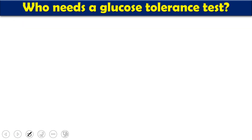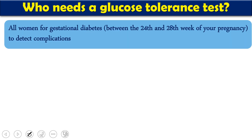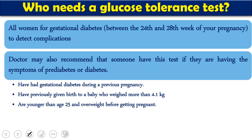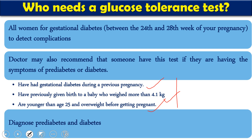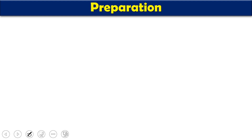Now, who needs to go for a GTT test? There are certain conditions when a doctor normally suggests this. All women who had previously been diagnosed with gestational diabetes, roughly between the 24th to 28th week of their pregnancy, should be tested to detect complications. A doctor may also recommend this test if someone had pre-diabetes or diabetes, or had gestational diabetes during a previous pregnancy, or if the lady had given birth to a baby who was obese or more than 4.1 kg.